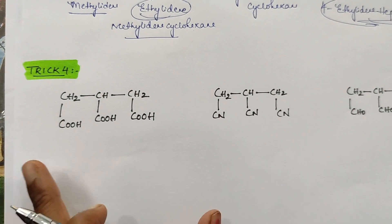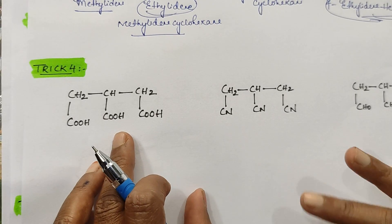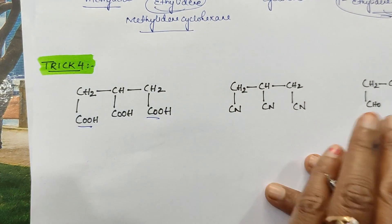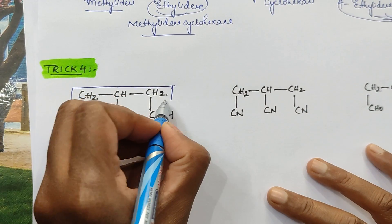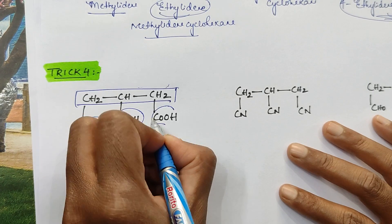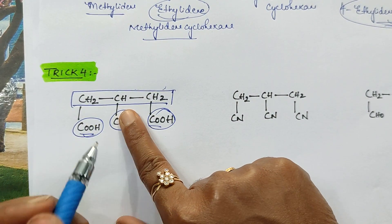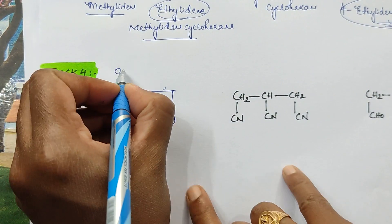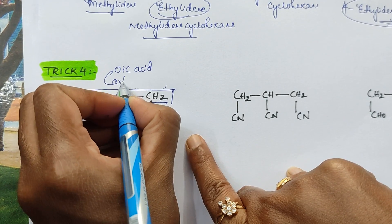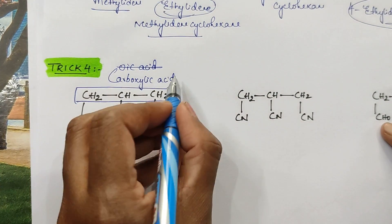In trick number 4, I want to tell you: when more than two same functional groups are directly connected to the parent chain, if two functional groups are present, you should not include them in a parent chain. You have to select the main chain as your parent chain. All the functional groups you have to give as a different naming. If only two COOH are there, it is a secondary suffix — you have to give oic acid. But whenever three are there, you have to give carboxylic acid as the naming.